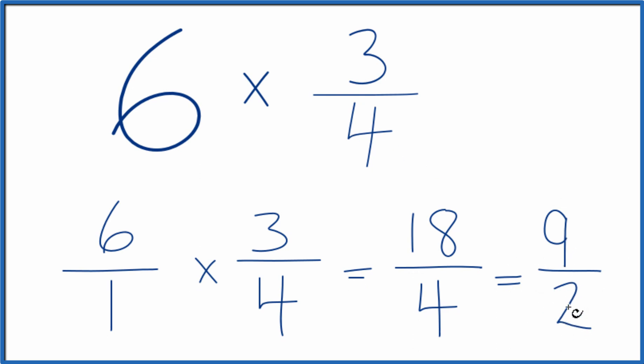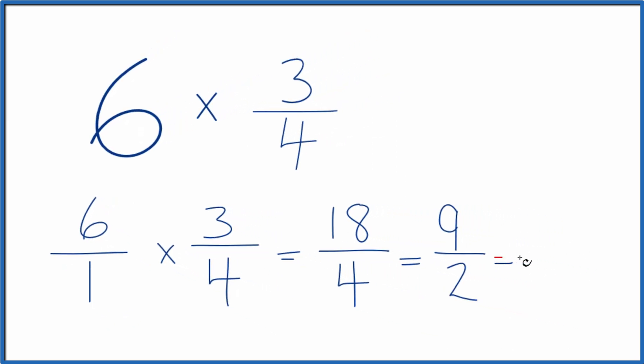You could convert 9 over 2 to a mixed number. Right now it's an improper fraction. So 2 goes into 9 4 times with 1 left over. Bring the 2 across. 9 over 2, 9 halves, does equal the mixed number 4 and 1 half.